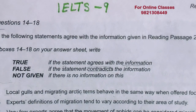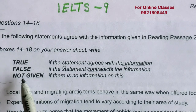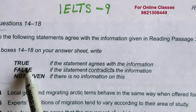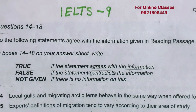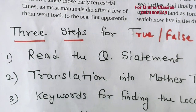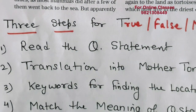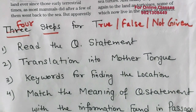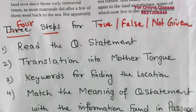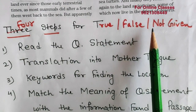Let's discuss True, False, Not Given — how to go about it, how to do this. While doing True, False, Not Given, we should always follow four steps. Let's look at these four steps.